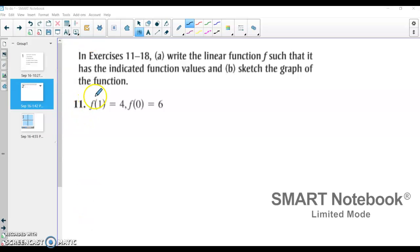All right, here is how you do problem 11 on homework 1.6. Ultimately, what this problem wants us to do is write a linear function such that if we input 1, we get out 4, and if we input 0, we get out 6.